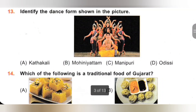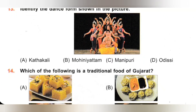13th. Identify the dance form shown in the picture. A. Kathakali, B. Mohiniattam, C. Manipuri, D. Odissi. The dance form shown in the picture is Odissi, a classical dance form of Odisha. Option D is the correct answer.